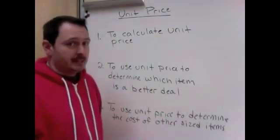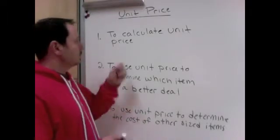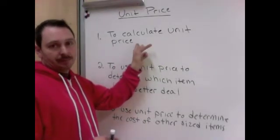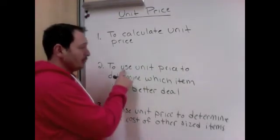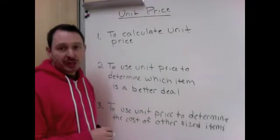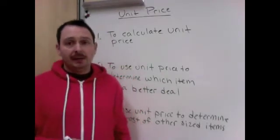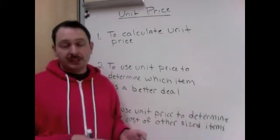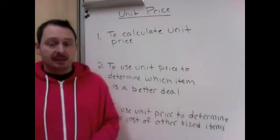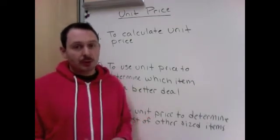So today we're working on unit price. The learning intentions for today will be to calculate the unit price of an item. And then the next two will be using unit price to determine which item is a better deal. Is it a better deal to pay for a 2 liter bottle of pop for $2.50 or 6 cans of pop for $3.50? Which one's a better deal?